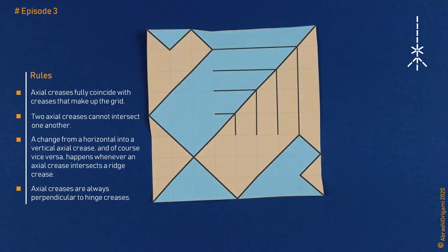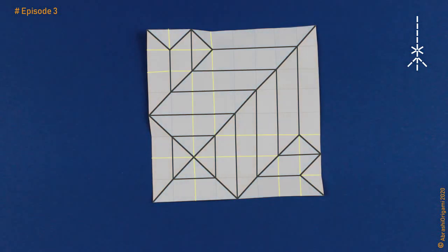Now, we know which color represents which type of an axial crease. Blue areas contain horizontal, and the orange areas contain vertical axial creases. Now we can fill the rest of the crease pattern with appropriate axial creases. I hope you agree that the axial crease defining procedure is quite simple and straightforward. Now that we have defined where hinge creases, ridge creases, and all axial creases are, our crease pattern is more or less complete.